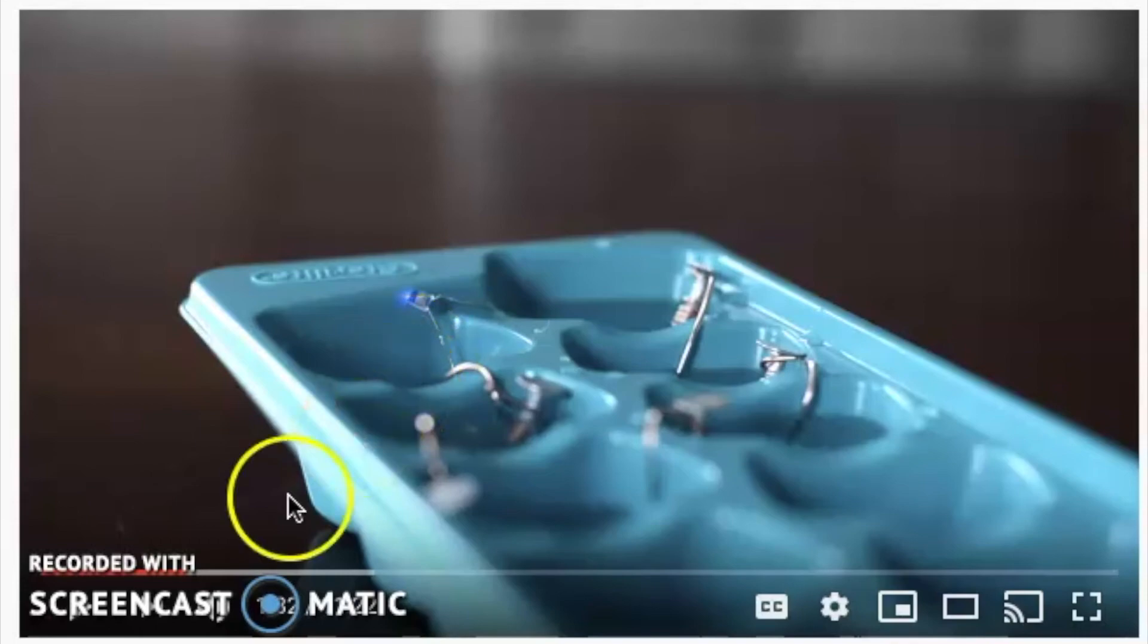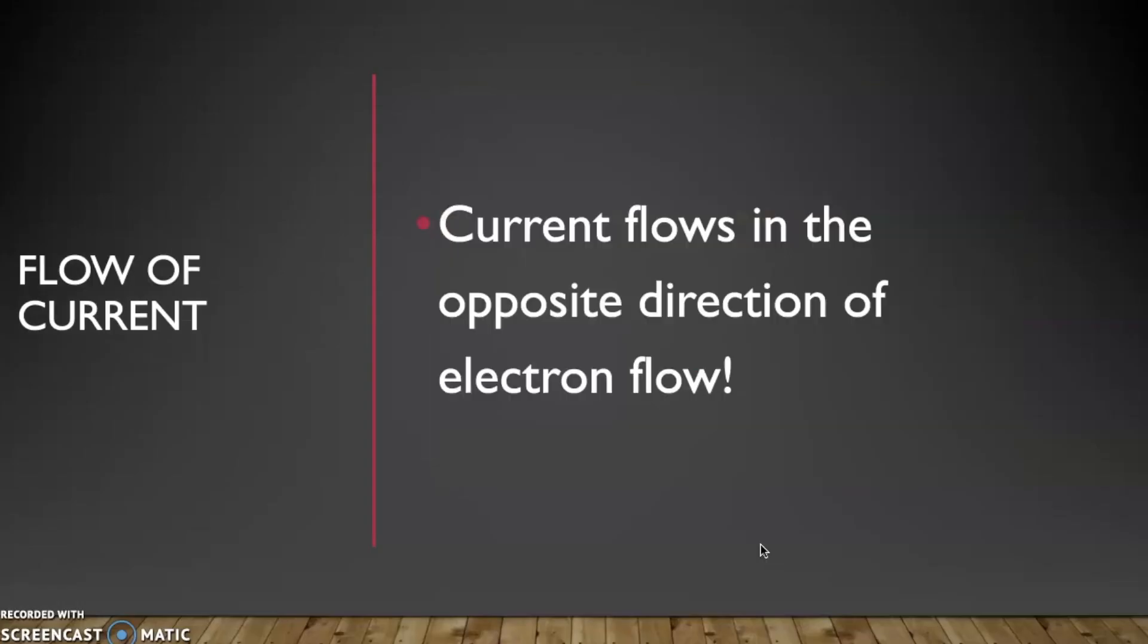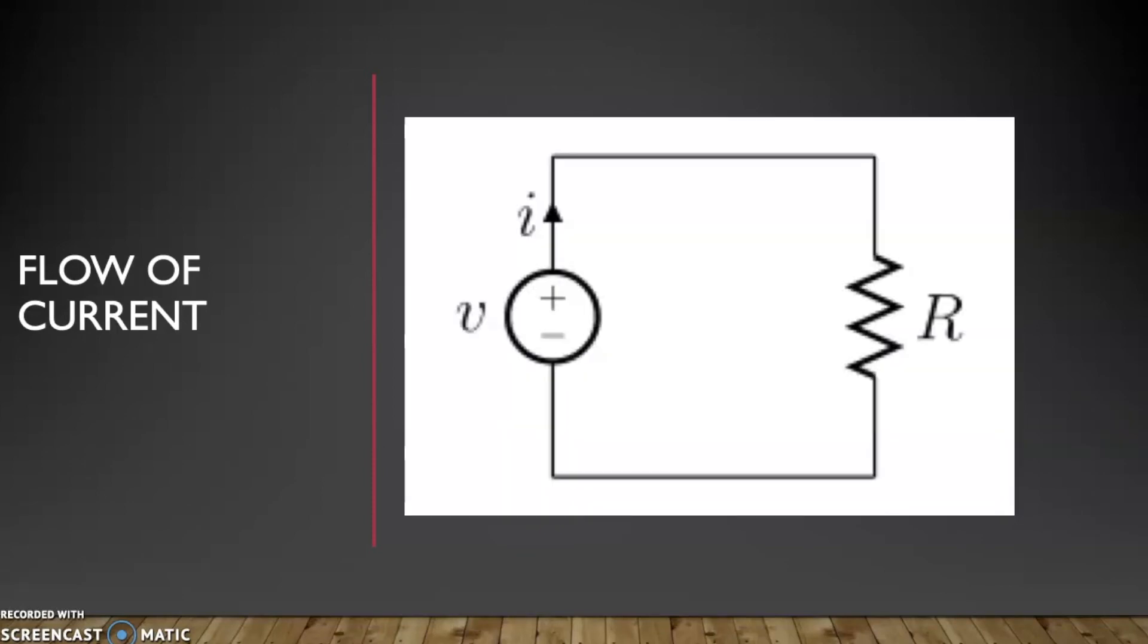So it is important to note the flow of current. Current flows in the direction opposite of electron flow. So if we're looking at this diagram right here where we have our battery and we have a resistor, which way is the current going to flow? The current is going to flow away from the positive towards the negative.